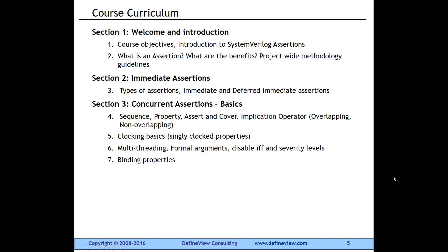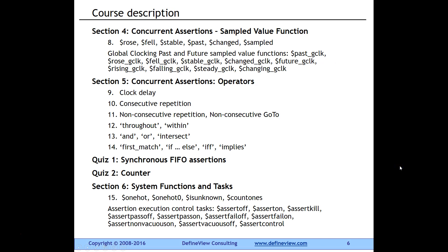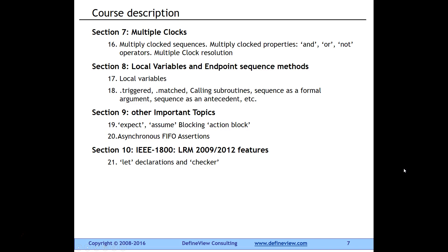Let's quickly go through the course curriculum. We will start with immediate assertions and then look at the basics of concurrent assertions, with each section having multiple lectures. Then we will cover the so-called sample value functions, and dive deep into concurrent assertion operators, which are the gist of the language. We will have two quizzes — a synchronous FIFO and a counter. Then we'll go through system functions and tasks, and discuss multiply clocked sequences and properties, and local variables.